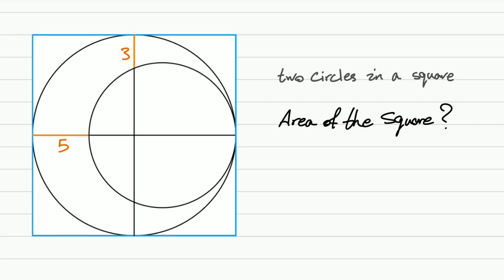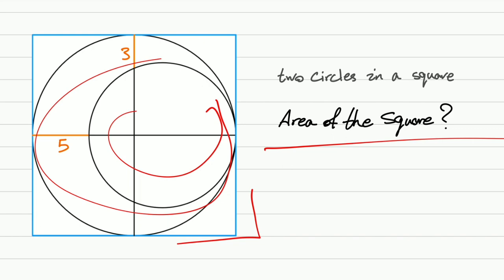Hello everyone, welcome to another episode of Daily Math and yet another geometry problem. We have a square and two circles inside it. We want to find the area of the square. Give it a try, then watch the solution. Good luck.